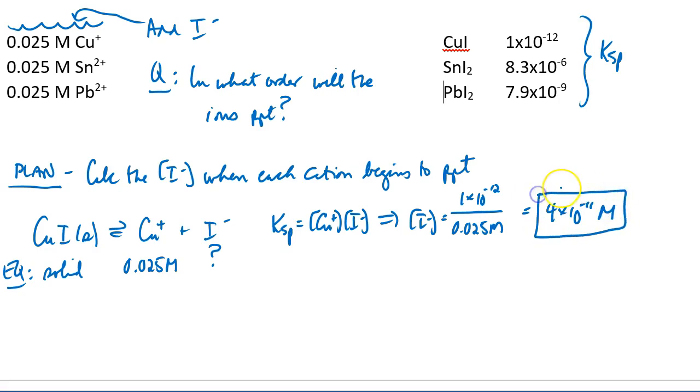That's not a very big concentration. Can you imagine adding iodide, and as soon as it reaches 10⁻¹¹ molar, copper-1 starts to precipitate? I wouldn't be surprised if copper-1 precipitated first.